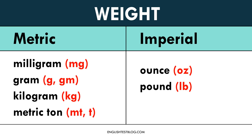For example, 2.2 pounds is roughly equal to 1 kilogram. The stone is less common and used mainly in the UK for body weight. One stone equals 14 pounds, or about 6.35 kilograms in the metric system.